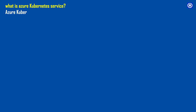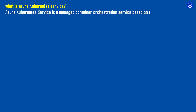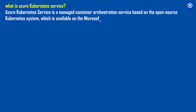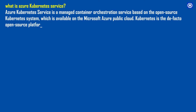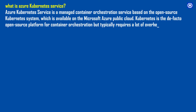What is Azure Kubernetes Service? Azure Kubernetes Service is a managed container orchestration service based on the open-source Kubernetes system, which is available on the Microsoft Azure Public Cloud. Kubernetes is the de facto open-source platform for container orchestration, but typically requires a lot of overhead in cluster management.